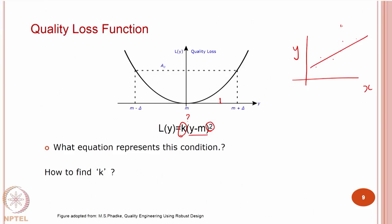It is just a parameter estimation problem. If you have a set of points that follows a linear trend, the form of the equation is y equals mx plus c. The only difference here is we are doing x squared, but you will still have to find the coefficient. It is only a coefficient-finding problem.